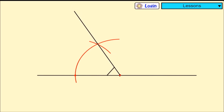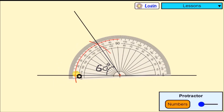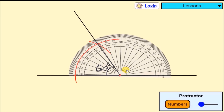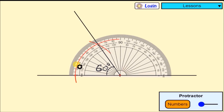Let's check and see if it is exactly 60 degrees. I'll get my protractor and measure. From my measuring, you can see that it is 60 degrees. So we are correct.